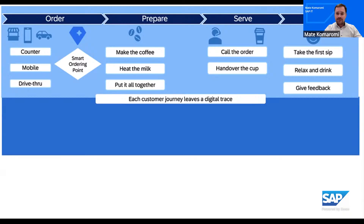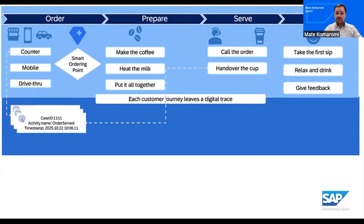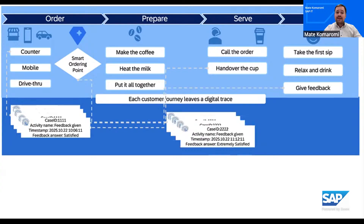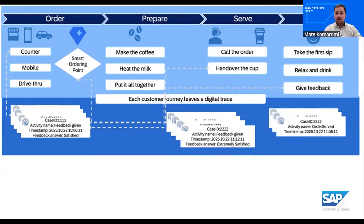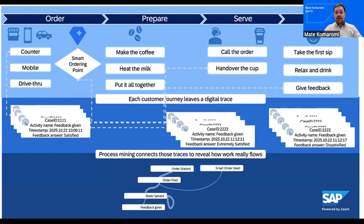Let me show you some examples of these digital traces. One customer orders at the counter, the order starts, then waits, then pays, then the order is served, and they leave satisfied. Another uses the smart kiosk, pays faster, and feels really satisfied. A third reorders twice after a mix-up, order is served, another served, then gives feedback — ending with dissatisfied. So three coffees, three journeys, three outcomes, all leaving different traces. Connect them, and you see not just the events, but the stories. That's the essence of process mining: transforming everyday moments into insights we can act on.